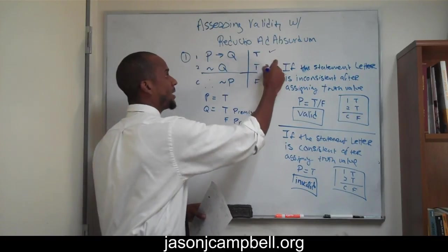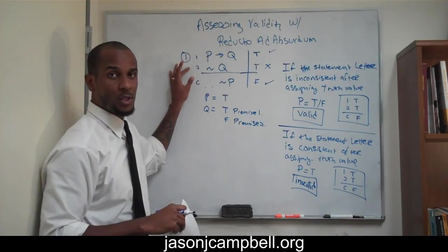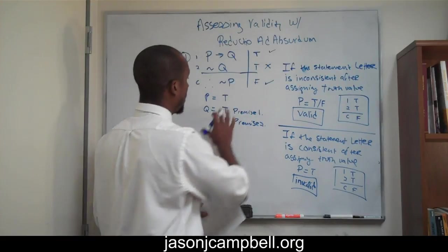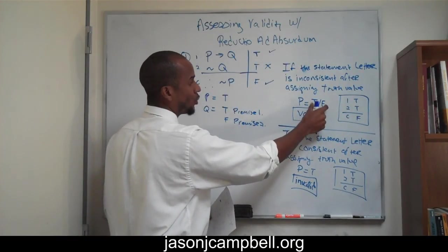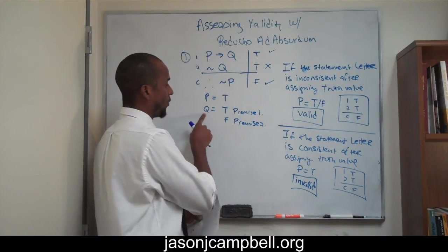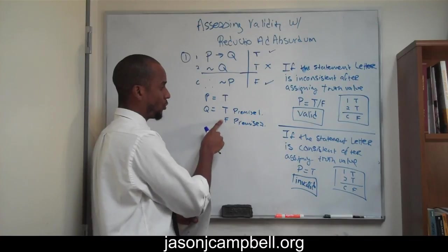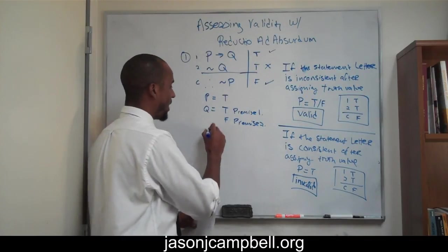So we recognize immediately that there's an error on line two. There's an error on line two, and insofar as there's an error on this line, we are substituting two truth functions, true and false, for one statement letter. You cannot substitute two truth functions for one statement letter, so we know that this has to be valid.